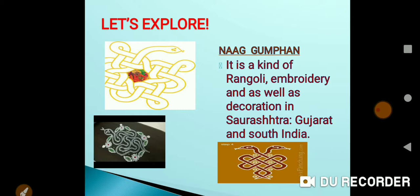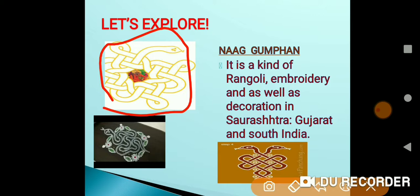Now, about Nag Gumpha - you have seen this picture on the first page of this chapter. Nag Gumpha is a kind of rangoli, embroidery, or decoration done in Maharashtra, Gujarat, or South India. It features one, two, or three snakes drawn with their tails and designs made properly. You can easily identify Nag Gumpha in an exam just by looking at the picture.